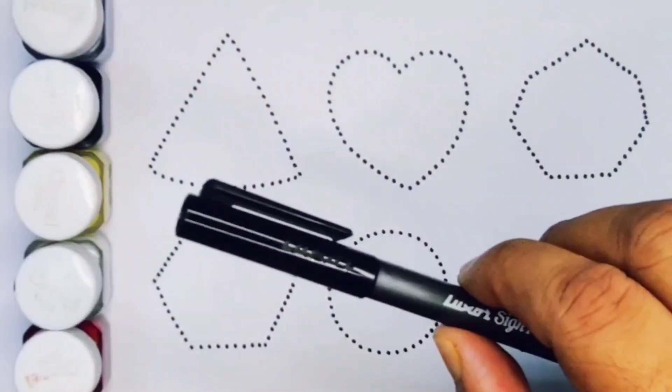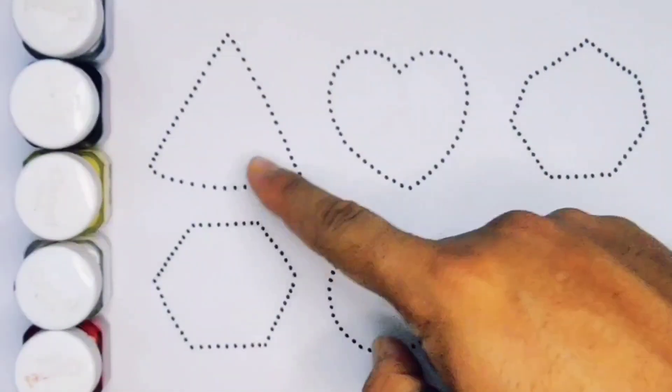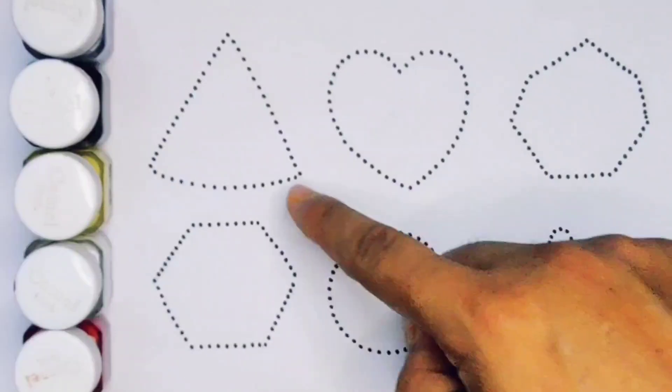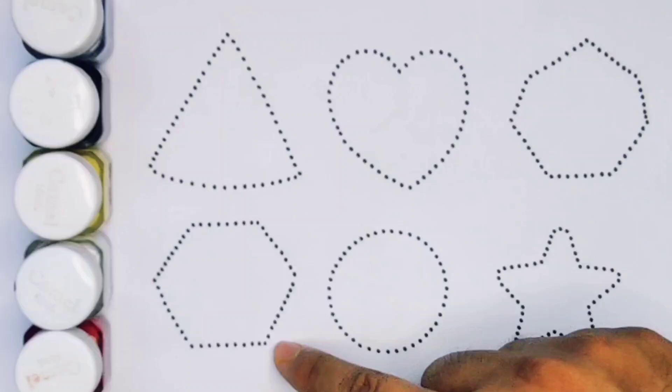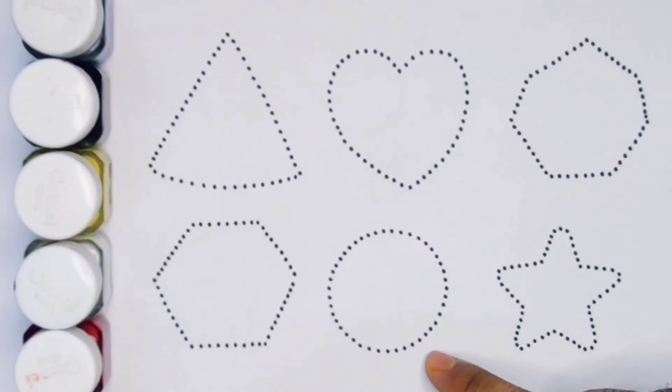And black color. Now let's learn the 2D shapes. Triangle, heart, heptagon, hexagon, circle, and star.